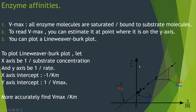Vmax is where all enzyme molecules are saturated — meaning they are all bound to substrate molecules. You can read Vmax from the curve, but it's an estimation. For a more accurate value, you can use a Lineweaver-Burk plot: plot 1/rate on the y-axis against 1/[substrate concentration] on the x-axis, giving a linear graph. The y-intercept is 1/Vmax and the x-intercept is -1/Km, from which you can calculate both values accurately.